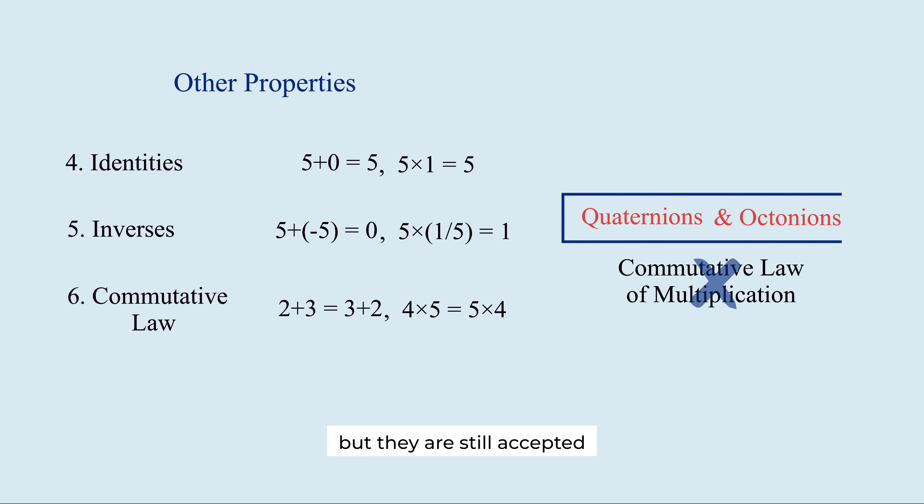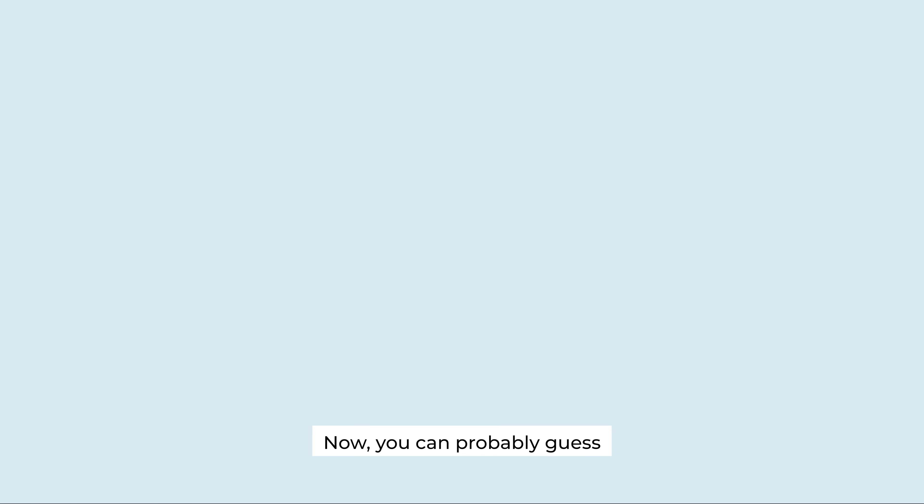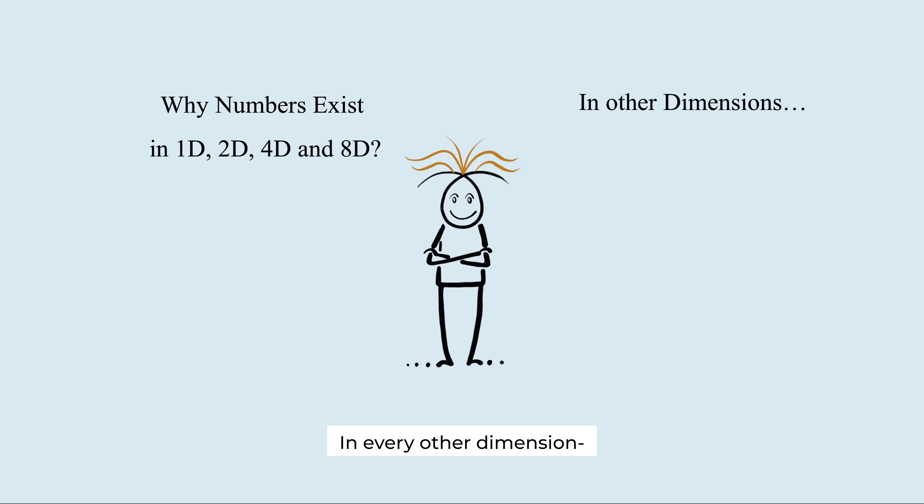Now, you can probably guess why number systems exist only in dimensions 1, 2, 4, and 8. In every other dimension, these essential operation rules are not all satisfied.